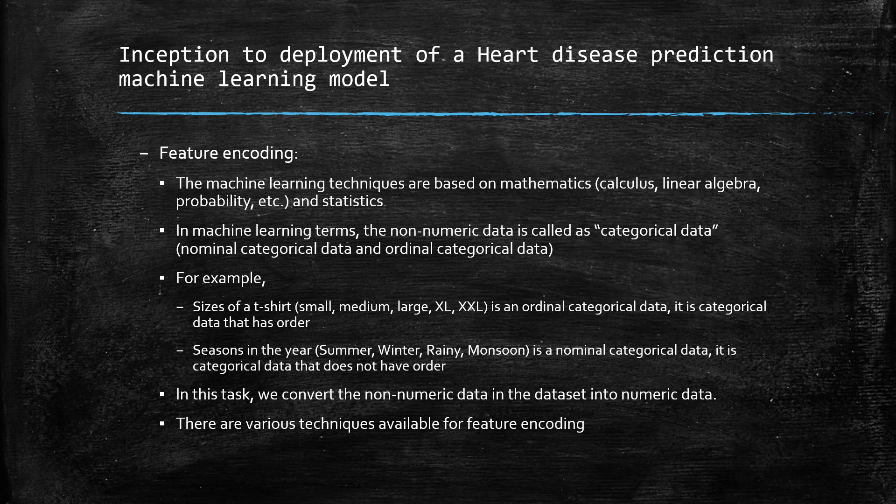Seasons in a year like summer, winter, rainy, and monsoon are nominal categorical data, where there is no ordering between the values. In feature encoding, the task is to convert this non-numerical data into numerical data. Similar to feature selection, there are a number of techniques available for performing feature encoding.